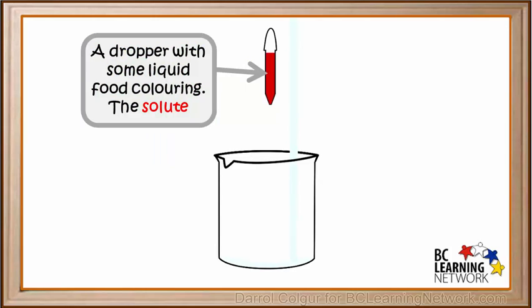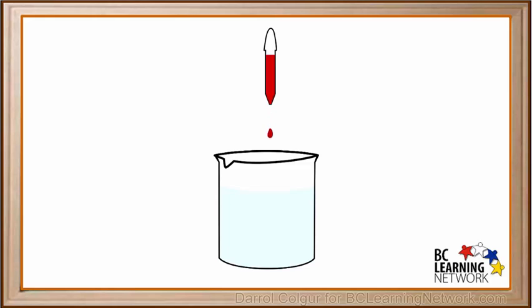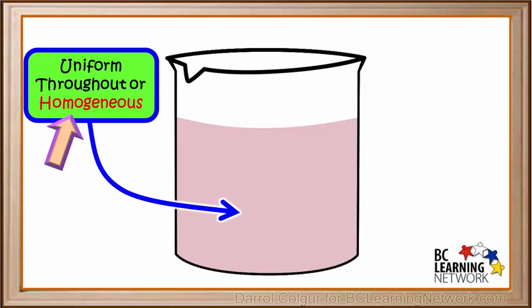Now we'll add some tap water to our beaker. The water is the ingredient present in the larger amount here, so it's called the solvent. Now we'll add some food coloring to the water and wait for it to dissolve and spread throughout the water. The act of spreading out by itself throughout the water is called diffusing. After we leave it long enough, the coloring has diffused throughout the water.